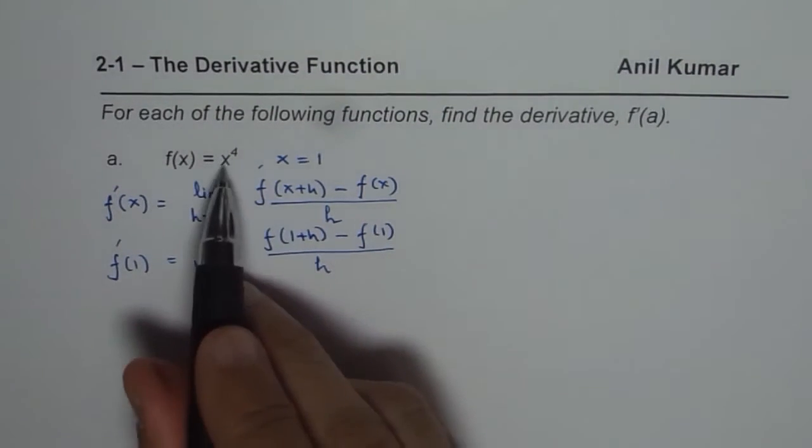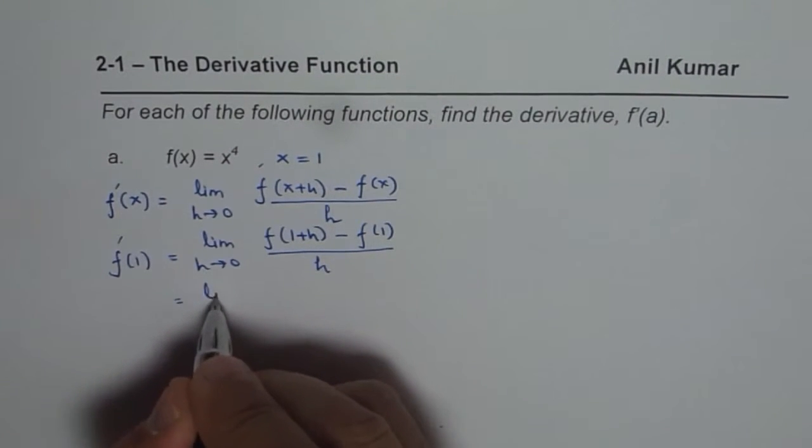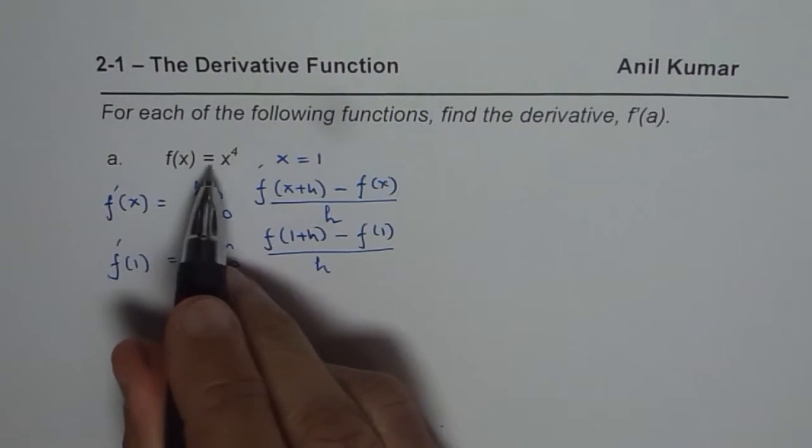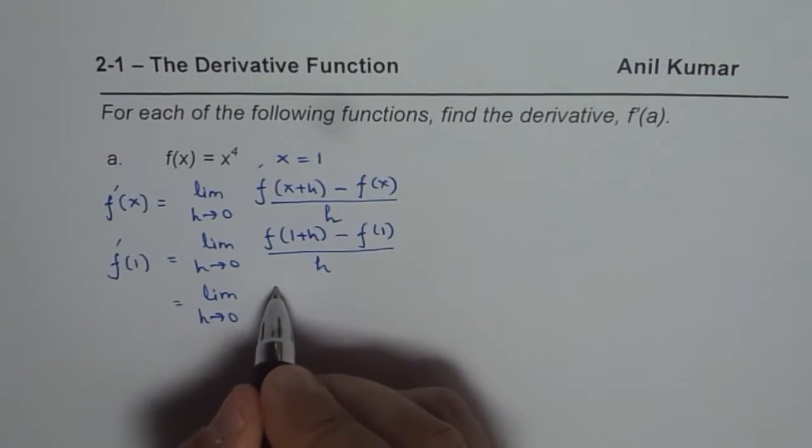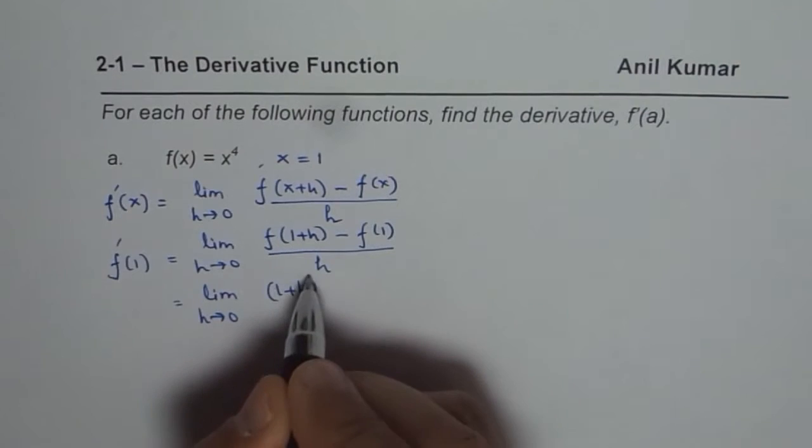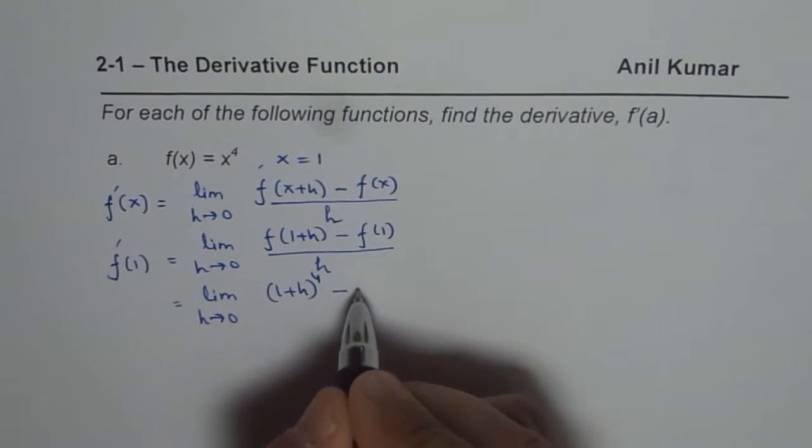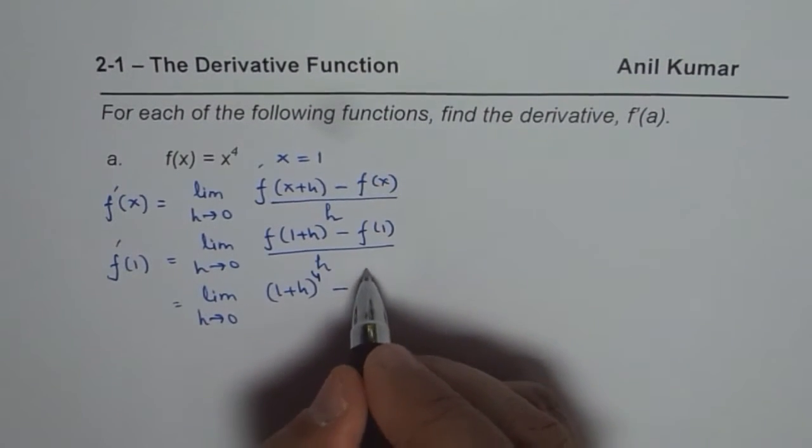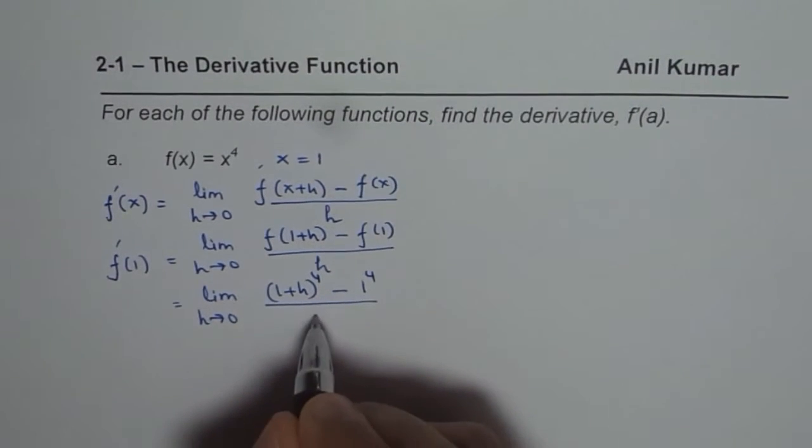Function given to us is x to the power of 4, so we can now write this as limit h approaches 0. The function is x to the power of 4, so it would be (1+h) to the power of 4 minus x is 1, so 1 to the power of 4, over h.